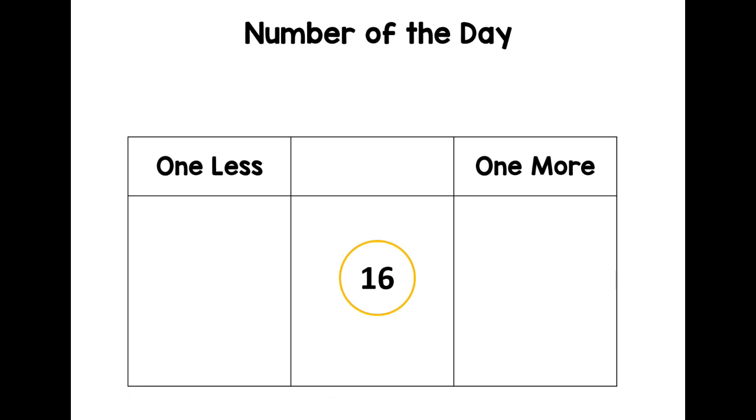Look down the number track for one less and along the number track to the larger numbers for one more. So one less than sixteen. If you have sixteen chocolates and you give one away, you'd have fifteen. But if you have sixteen chocolates and someone gives you one more, you would have seventeen. Well done.